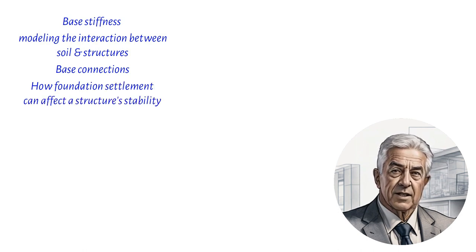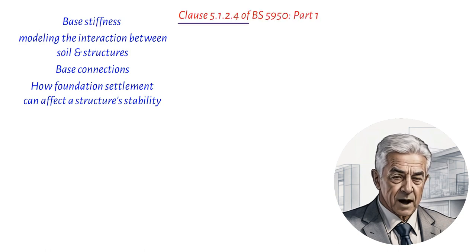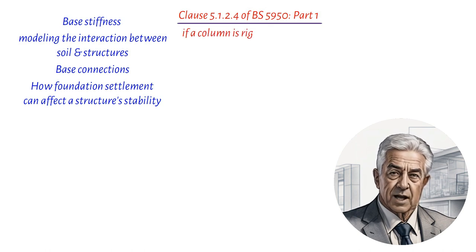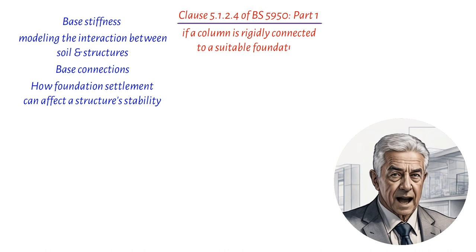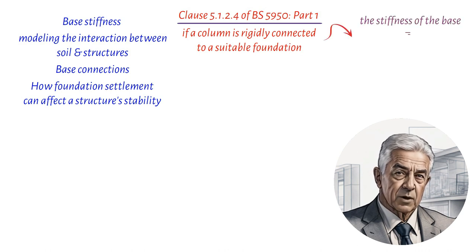So, let's start with Clause 5.1.2.4 of BS 5950, Part 1. This clause outlines that if a column is rigidly connected to a suitable foundation, then the stiffness of the base should be assumed to be equal to that of the column.